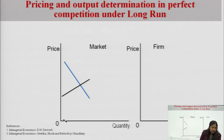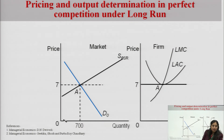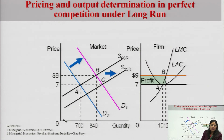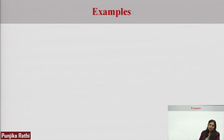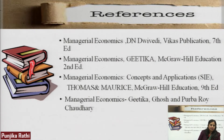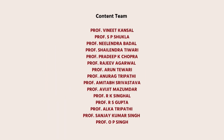The conclusion is that in the long run in perfect competition, there is no profit and no loss — average revenue equals average cost, meaning there are only normal profits. Examples of markets resembling perfect competition include the stock market, fruits and vegetables market, and the fish market — they are not perfect examples, but they resemble perfect competition.